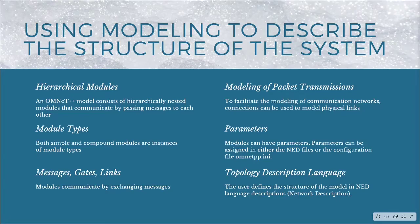For modeling, we model packet transmissions. To facilitate the modeling of communication networks, connections can be used to model physical links. Connections support a bunch of different parameters such as data rate, propagation delay, bit error rate, and packet error rate. These parameters and the underlying algorithms are encapsulated into channel objects. Users can parameterize the channel types provided by OMNeT++ and also create new ones.